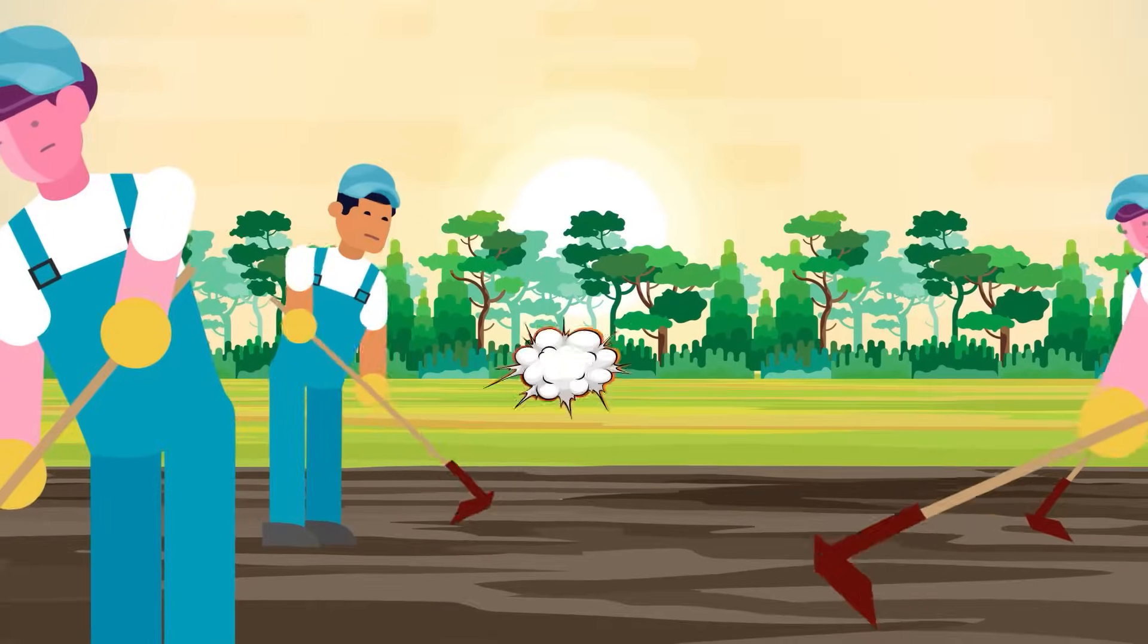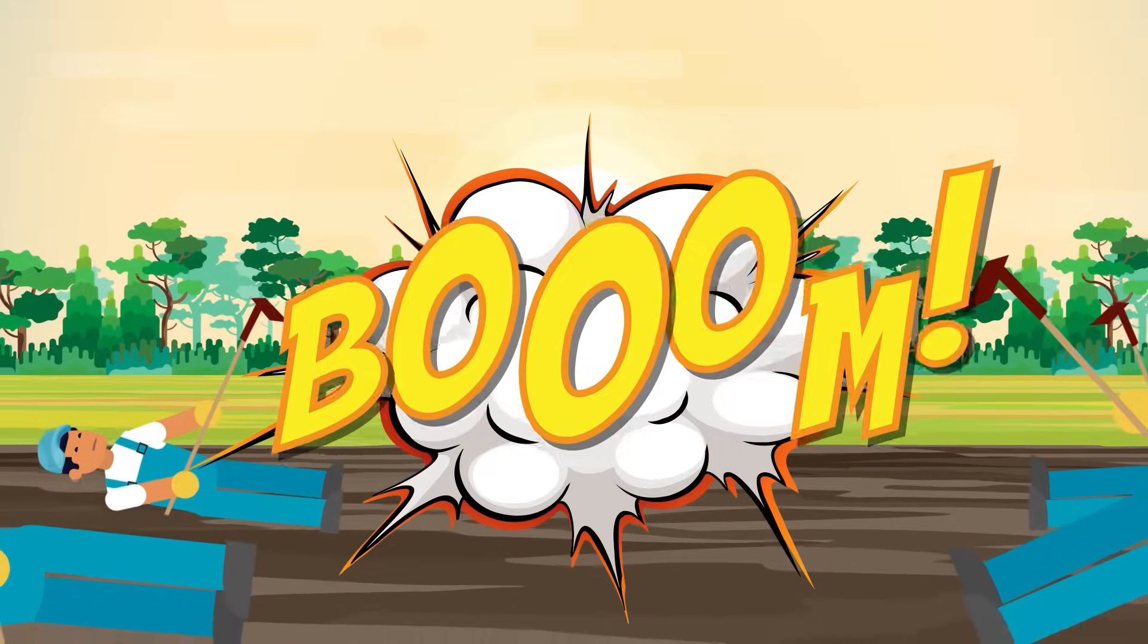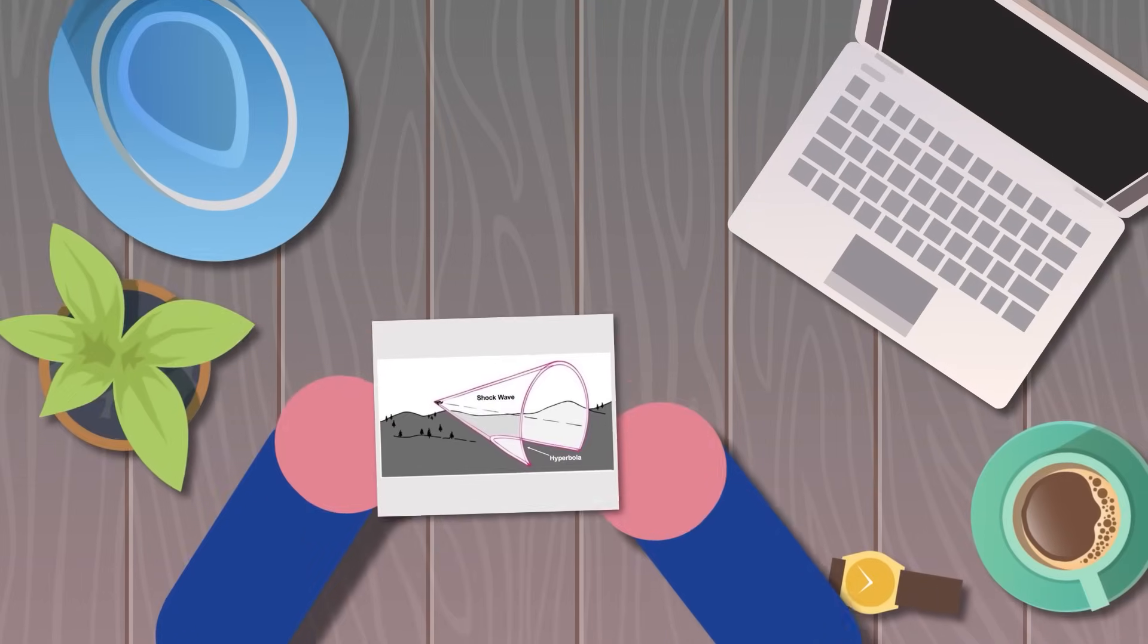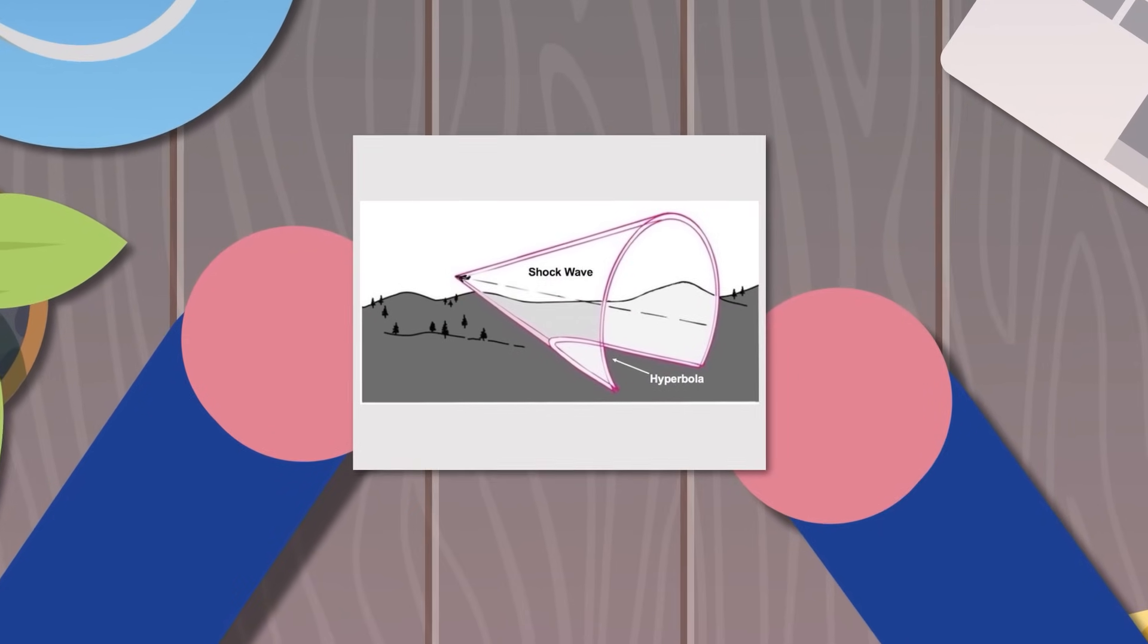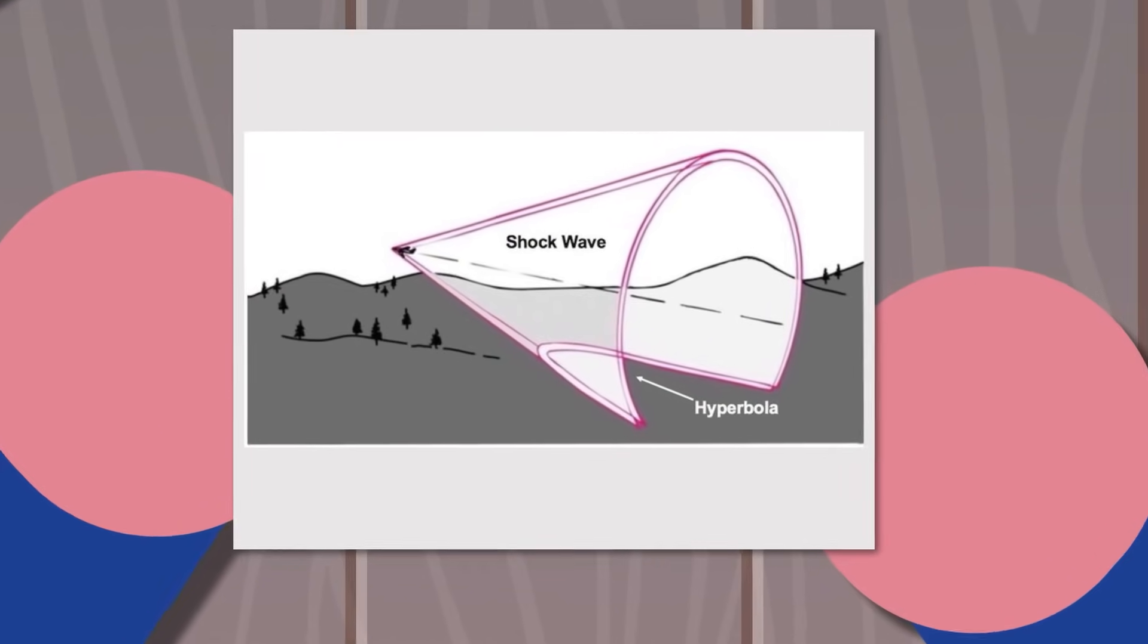But a sonic boom is not just generated at a single point. It is actually a cone shape called the Mach cone. Anyone within the area of the Mach cone will experience the sonic boom of an aircraft going faster than the speed of sound. So the plane does not need to fly directly above you.